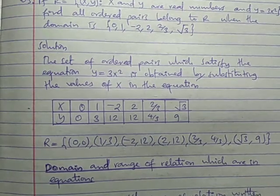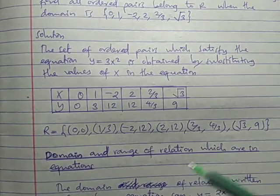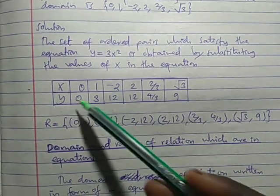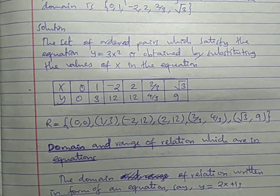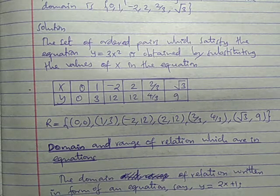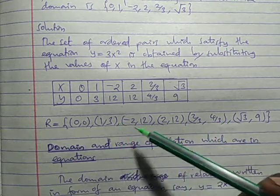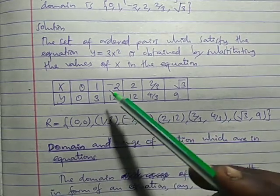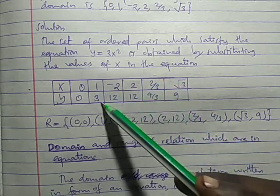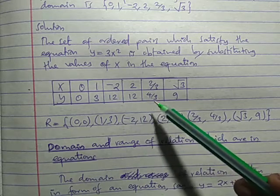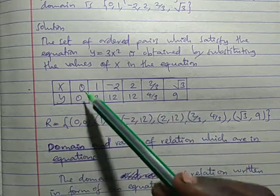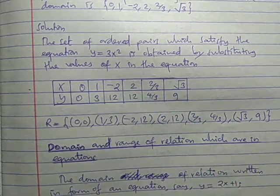For our given values of X and the equation Y = 3X²: when X=0, Y=0; when X=1, Y=3; when X=-2, X² is 4, times 3 is 12. From those you obtain the ordered pairs — easy. Those are your ordered pairs.